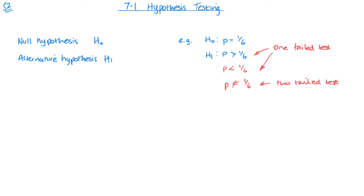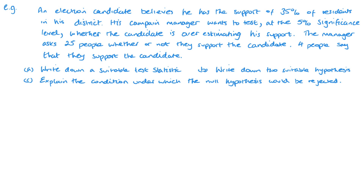For now I want to focus on understanding and setting out the null and alternative hypotheses. Let's look at this example: an election candidate believes he has the support of 35% of residents in his district. His campaign manager wants to test at the 5% significance level whether the candidate is overestimating his support. The manager asks 25 people, and four say they support the candidate. The 35% is what our null hypothesis should be, so H0: p = 0.35.